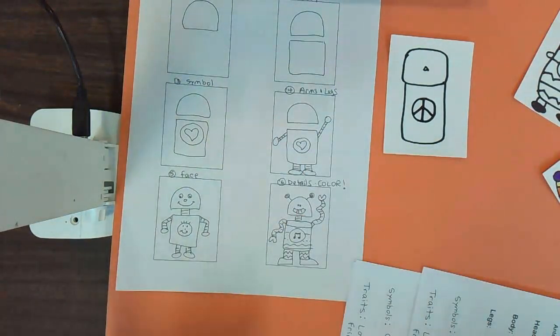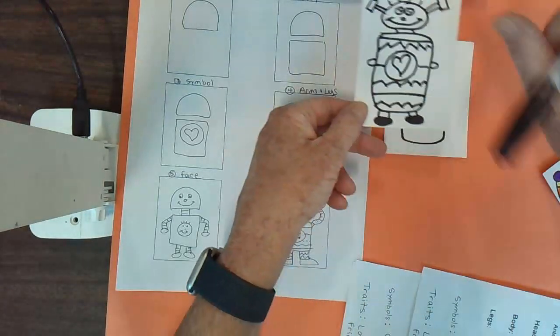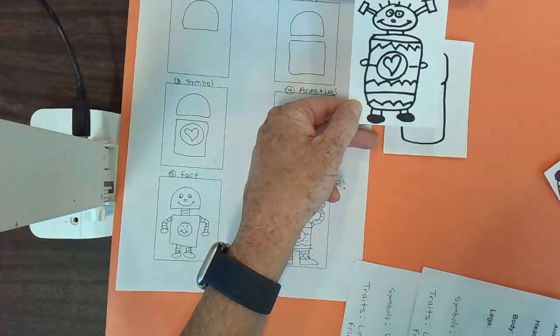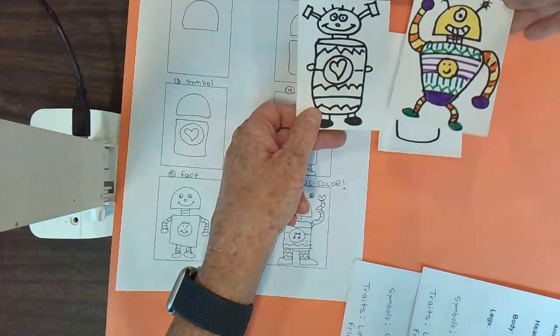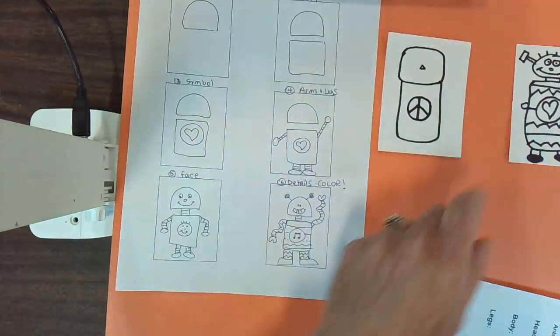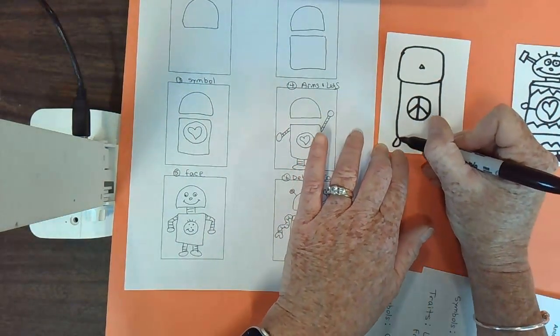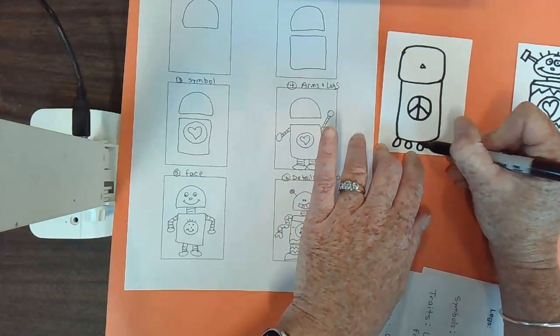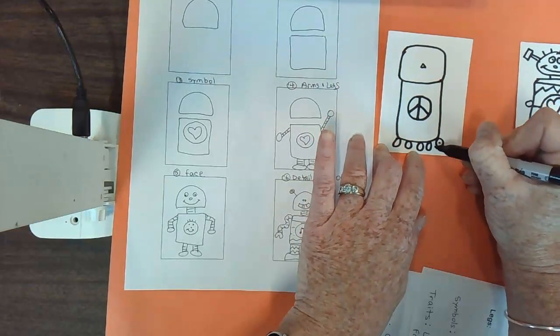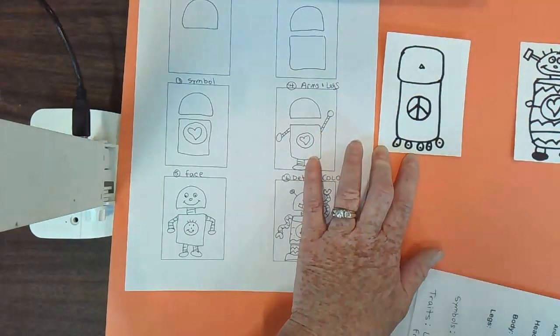Next, you want to add some arms and some legs. You could make little tiny arms or feet. You could make long wiggly arms and legs. Maybe your bot has several, maybe this bot's going to have wheels instead of arms and legs. That's fine. There's really no right or wrong way.